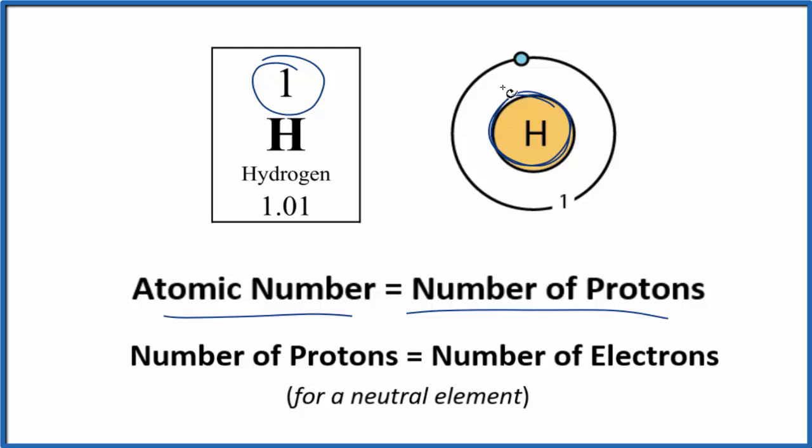So we have one proton in the nucleus of the hydrogen atom. For a neutral element, and all of the elements on the periodic table are listed as neutral, the number of protons is going to equal the number of electrons. So since we have one proton, we have one electron in the hydrogen atom.